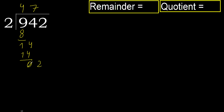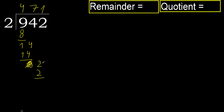Next: bring down, eliminate. We have 2. 2 multiplied by 1 is 2 — 2 is not greater. Ok, subtract: 2 minus 2 is 0.